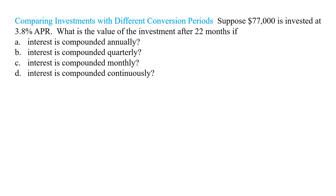So what do we know? The $77,000 is our P. The 3.8% is our R, and remember we need it as a decimal. For compounding annually, the first compounding happens after 12 months, the second at 24 months, the third at 36 months, and so on.